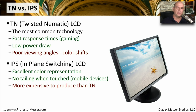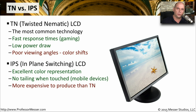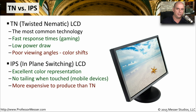The other kind of LCD monitor is the in-plane switching, or IPS LCD. These provide a very good representation of color, making them ideal if you're working with graphics. They're also good for mobile devices because touching the screen doesn't distort or shift the color. However, they are more expensive to produce, so we tend to see TN LCDs on lower-end systems and IPS LCDs on higher-end systems.